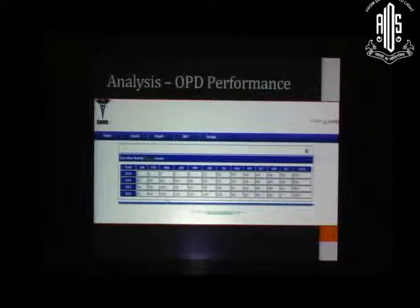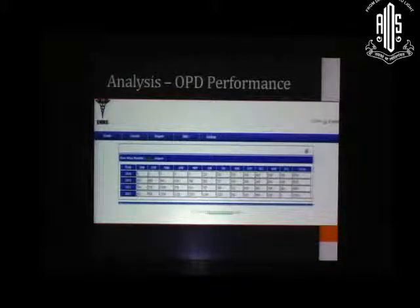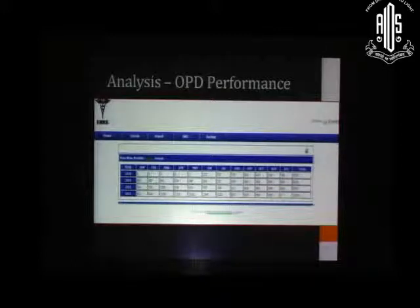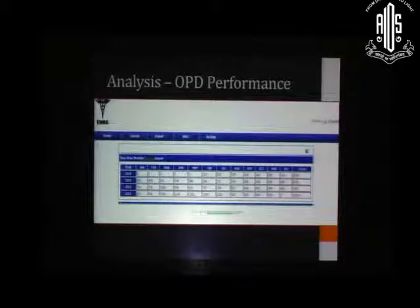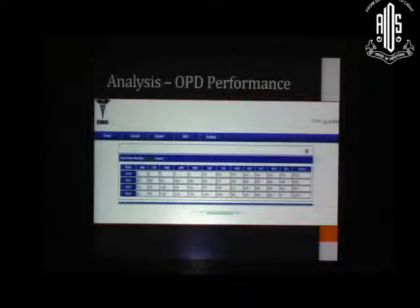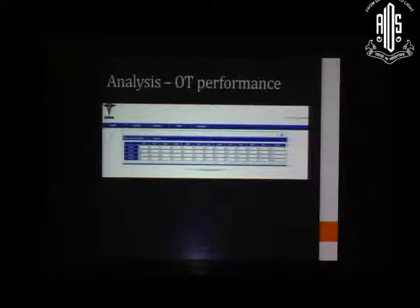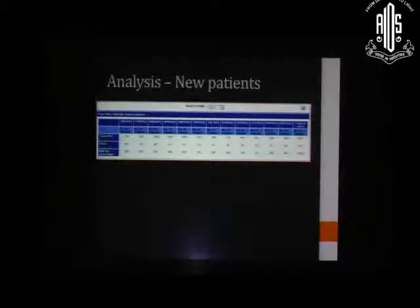OPD performance — whether you are doing well in your OPD or not, whether your practice is improving — is best tracked month by month and year on year. In private practice, your practice fluctuates month by month; some months are better, some are poorer. The best way to analyze is to compare the same month of this year with the same month of the previous year. That is how you can analyze OPD and OT performance. In private practice, you are not competing with anyone else — you are competing with yourself, so your data from previous years is important to analyze.